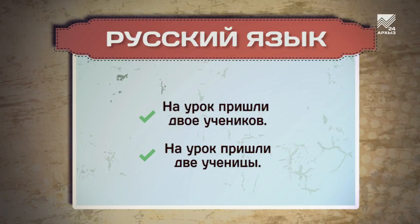На урок пришли две ученицы. По правилам, когда дело касается представительниц женского пола, употребляем количественные числительные: две ученицы, три сестры. Собирательные числительные — двое, трое, четверо — могут сочетаться с существительными мужского рода и общего рода, называющими лиц (друзья, сироты, ребята), и с существительными только множественного числа (сани, ножницы, сутки). Например: трое студентов, двое юношей, четверо ребят. При этом сказать «два студента» или «четыре брата» не будет ошибкой. А вот «трое сестёр» или «двое девушек» — уже недопустимый вариант.